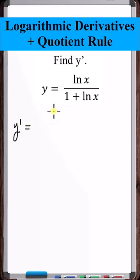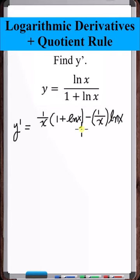So the quotient rule: derivative of the top, the derivative of natural log of x is 1 over x, times the bottom, minus the derivative of the bottom. So the derivative of this entire expression, derivative of 1 is 0, derivative of natural log of x is 1 over x, times the top, all over the bottom squared.